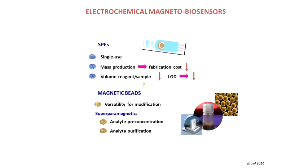We prepared magnetobiosensors by combining the excellent characteristics of screen-printed disposable electrodes with functionalized magnetic beads. These magnetic beads have a large active surface area, which allows the immobilization of high loadings of biomolecules on the surface of a solid electrochemical transducer upon applying a magnetic field, and also removes many matrix effects.